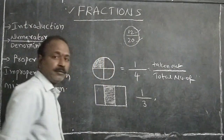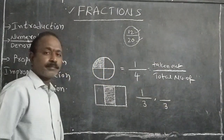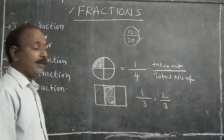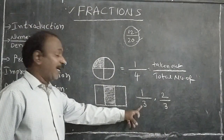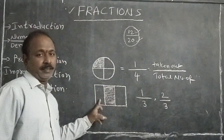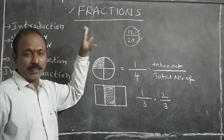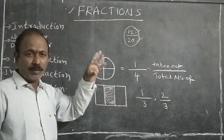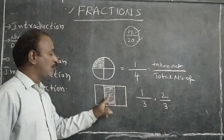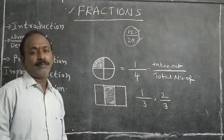What is the fraction denoted by the unshaded parts? Here total equal parts are three, and unshaded equal parts are two. So the fraction is 2 by 3. One by three is the fraction explaining the shaded region, and 2 by 3 is the fraction explaining the unshaded region. The fraction shows how many equal parts are taken out from the whole.